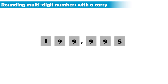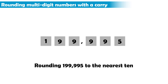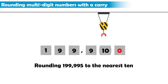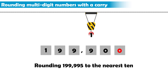Now let us round 199,995 to the nearest 10. The number made by the ones and tens digits is 95, and we know we have to round up to 100. So we add 1 to the digit on the left of the tens digit, and reset the tens digit and the digit to its right to 0.